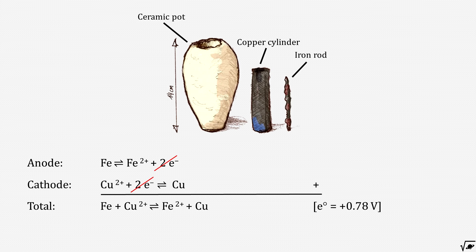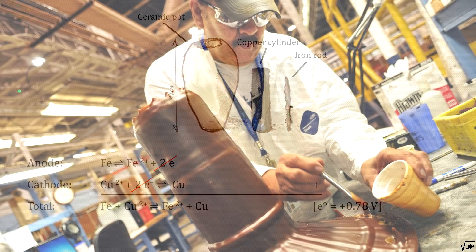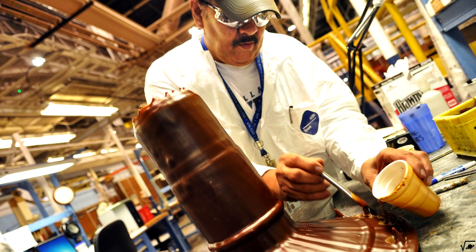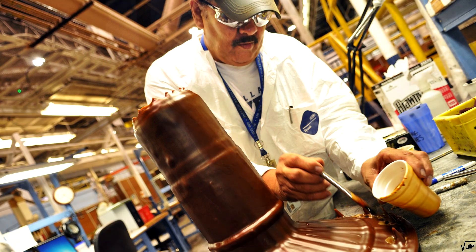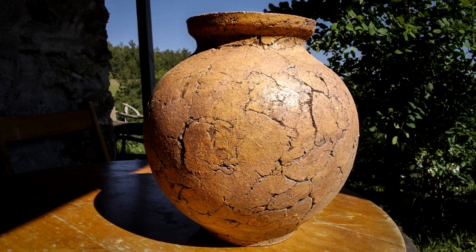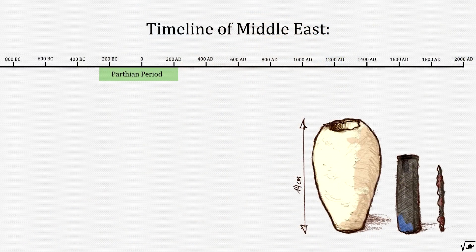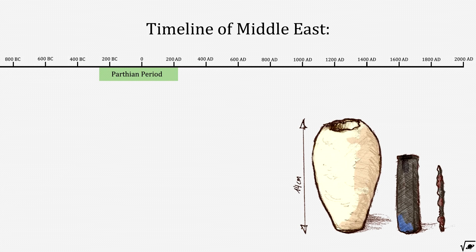But the question is, were those artifacts indeed used for this purpose? Well, probably not. They might have been used for a process called electroplating, or others claim the artifacts were used for storing scrolls. Some even claim that the artifacts don't originate from the Parthian period, but from the Sassanid period, which makes the Baghdad battery about 500 years less old than König predicted.